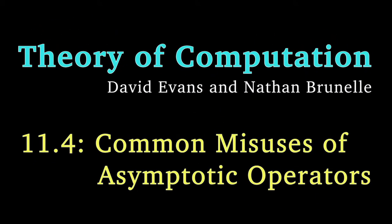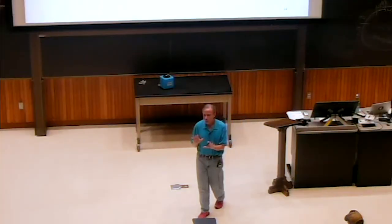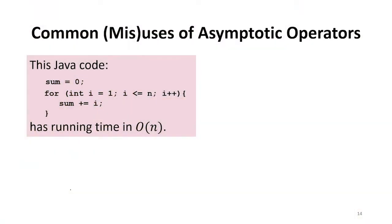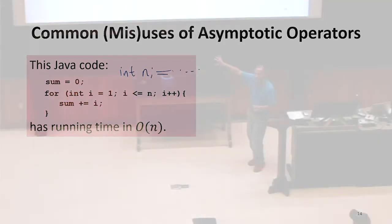Now hopefully what big O means is clear. How it's often used in talking about efficiency of programs is like this. You might have something that says here's some Java code. It is computing the sum of all numbers up to n. So n is some int. Got a value somewhere and that segment of code has running time in big O of n.